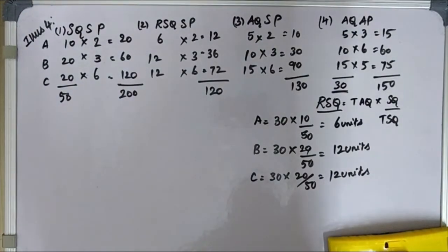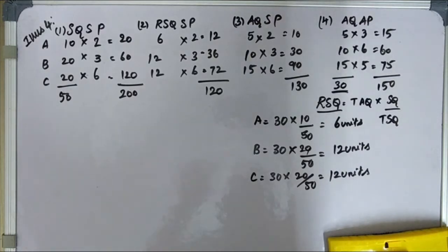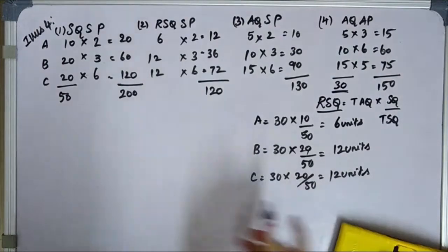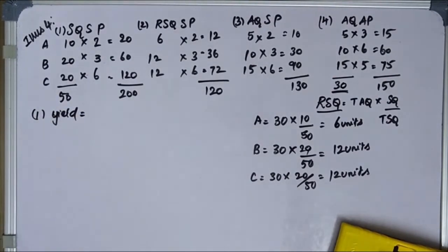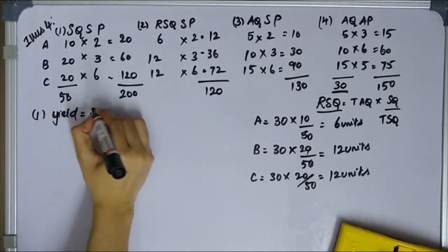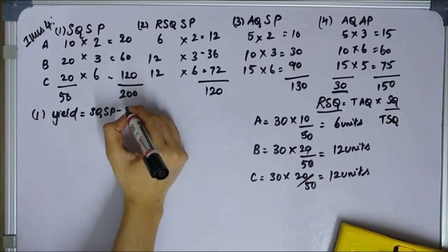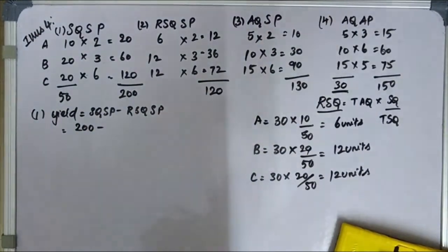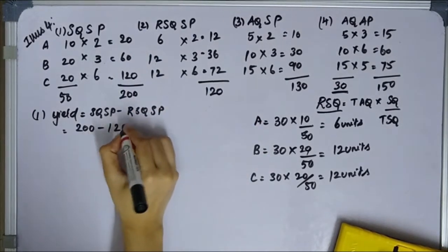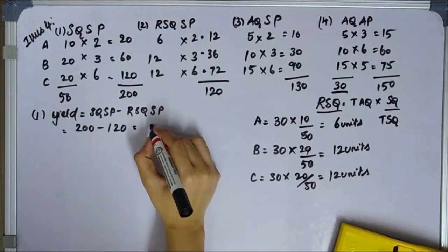Now we calculate the variances. Material yield variance = SQSP minus RSQSP = 200 minus 120 = 80 rupees favorable.